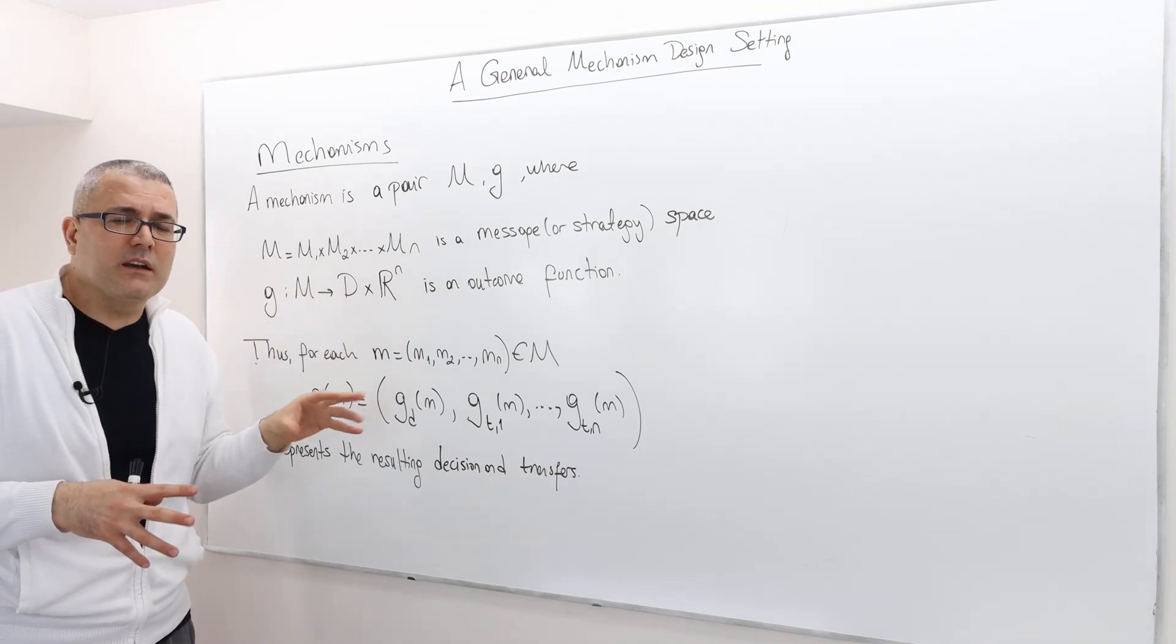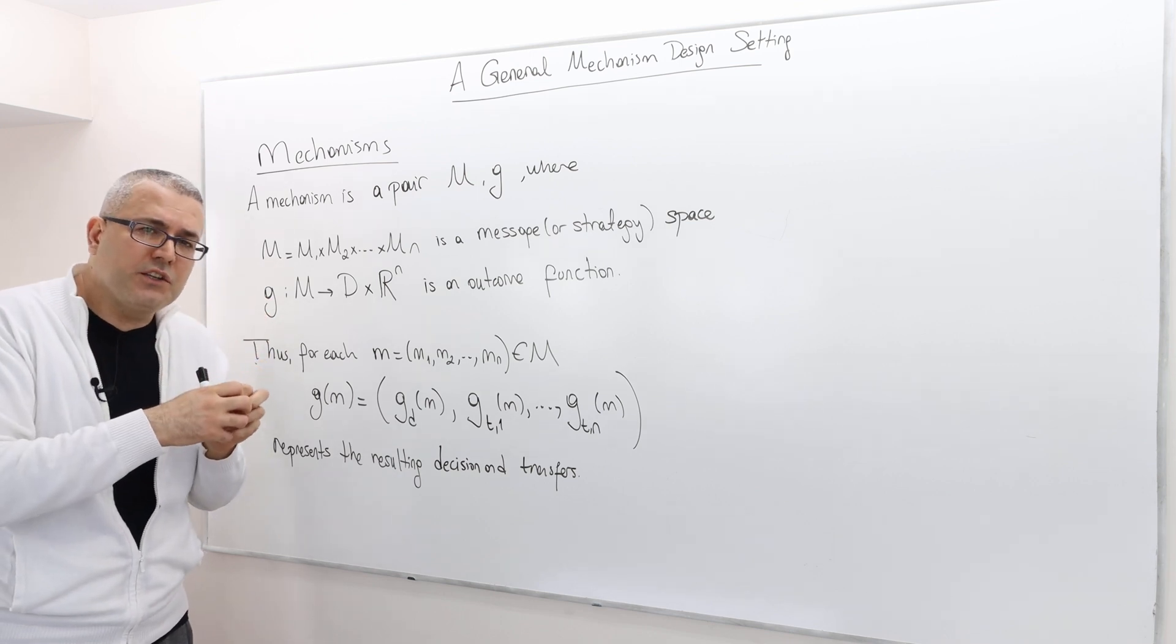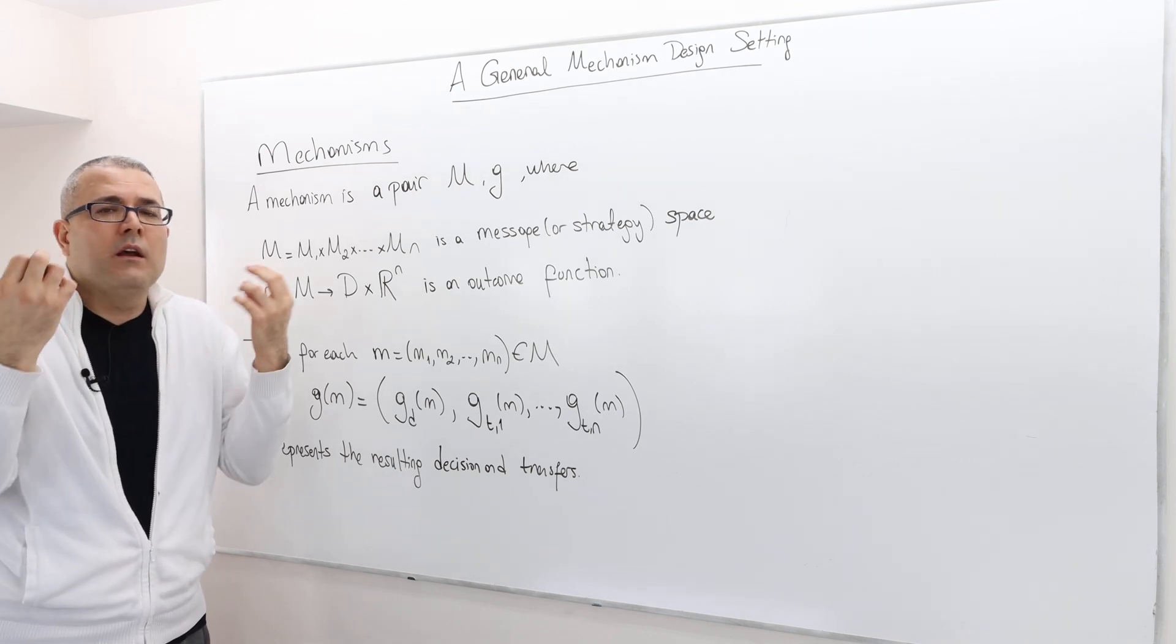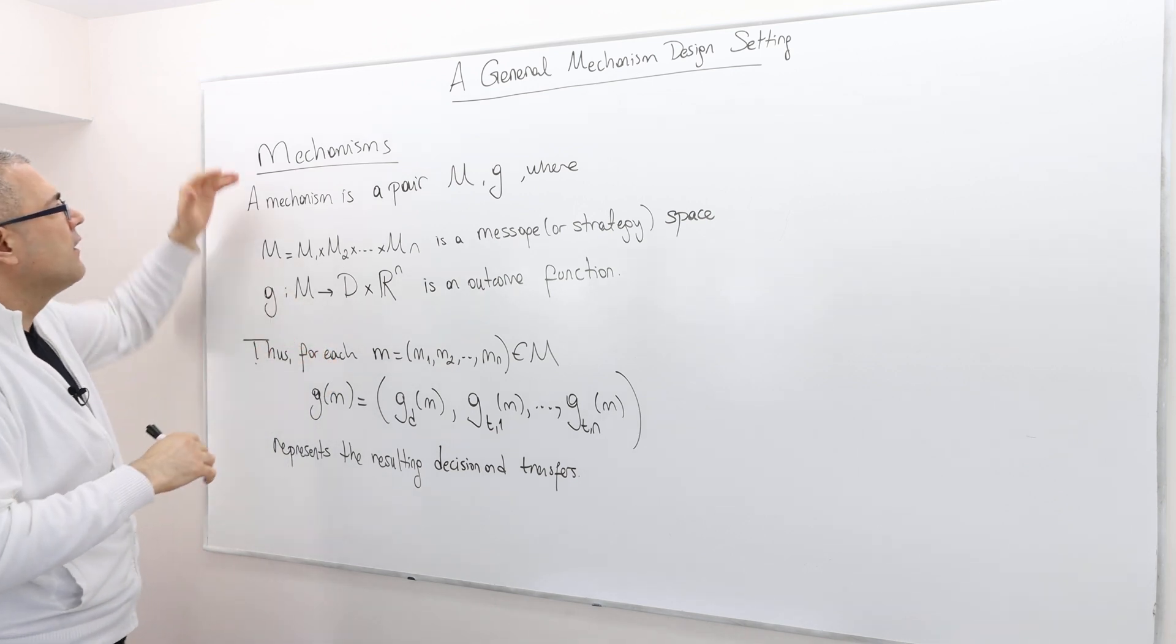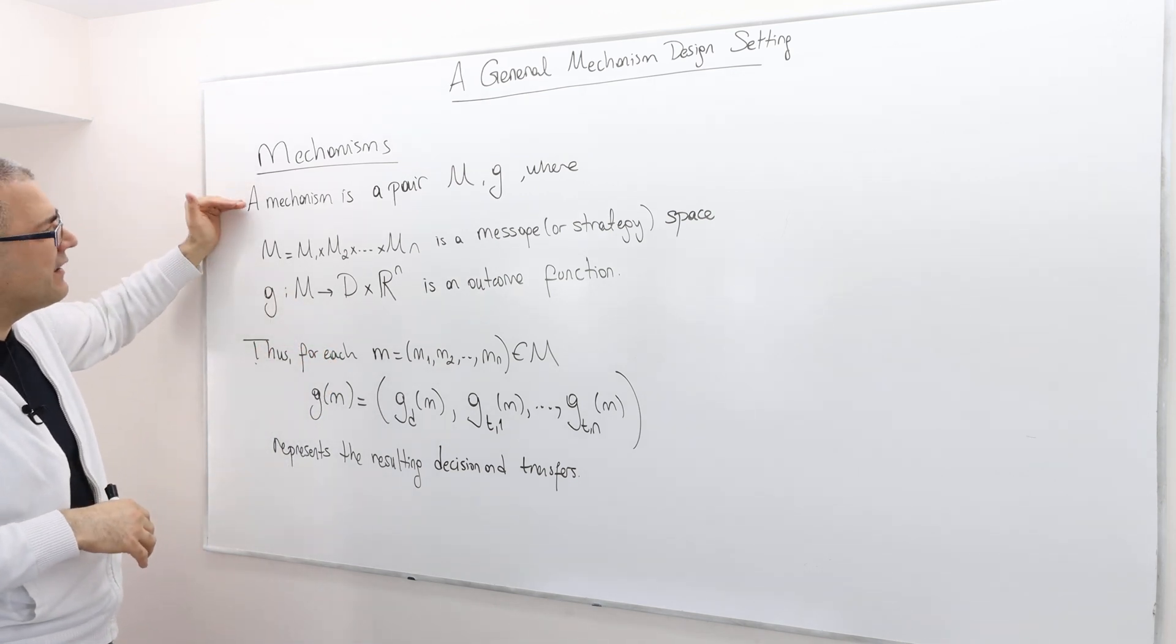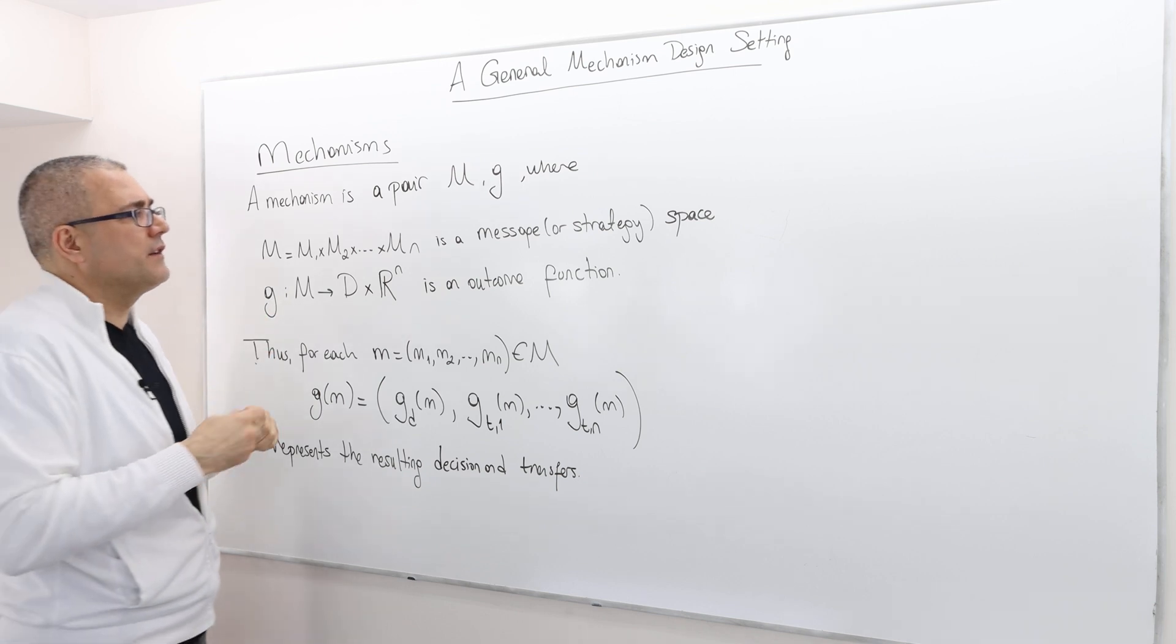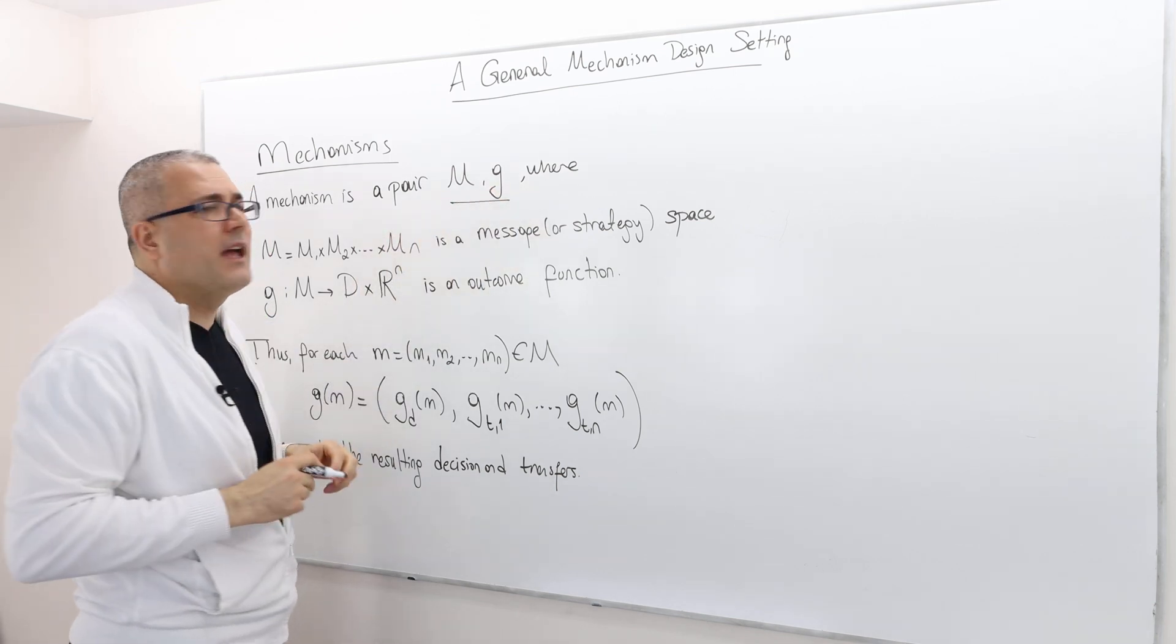But the mechanism designer - I'm sorry, social choice function is just one mechanism, but there might be a bunch of other mechanisms. All right. So what is a mechanism? A mechanism is a pair. It has two components, M and G.